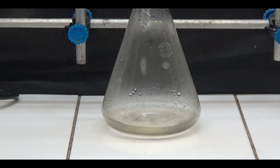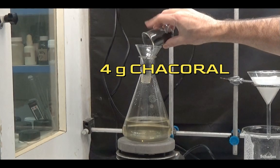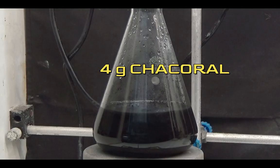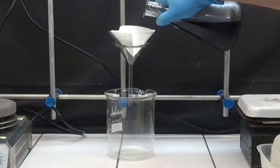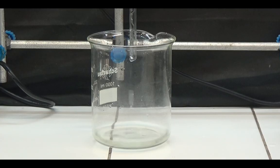We put the filtrate in an Erlenmeyer flask and add 4g of charcoal. We heat it to a boil for 20 minutes. We filter to remove the charcoal, and the solution should be transparent and colorless.